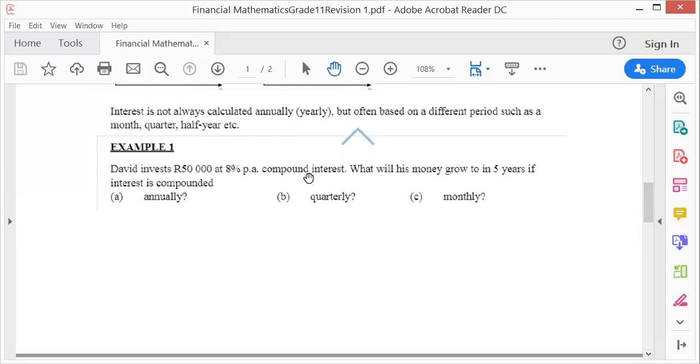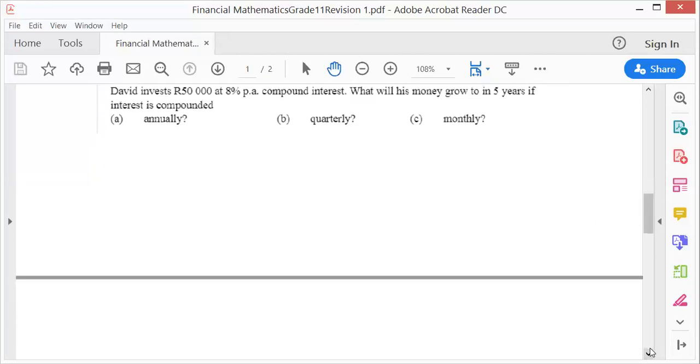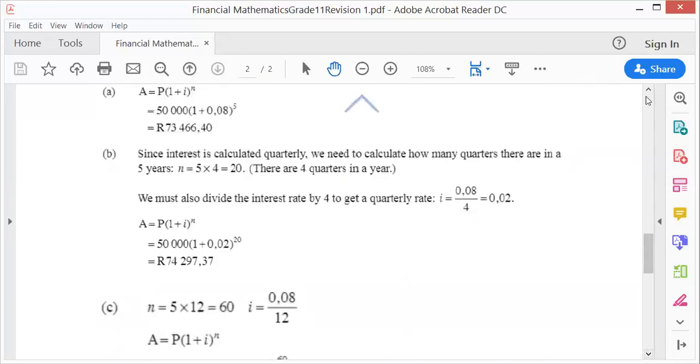They say compounded, so you know it is compound and you know exactly which formula to choose. What is given? 50,000 is your principal amount, 8% is your interest rate - it's not i yet, we must first divide 8 by 100. The time is 5 years.